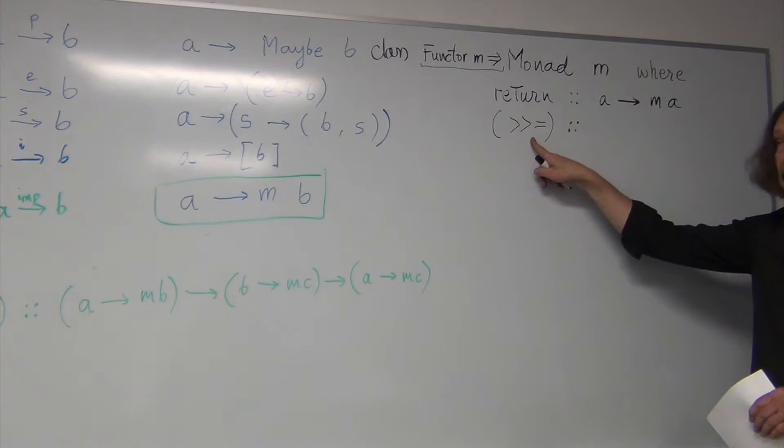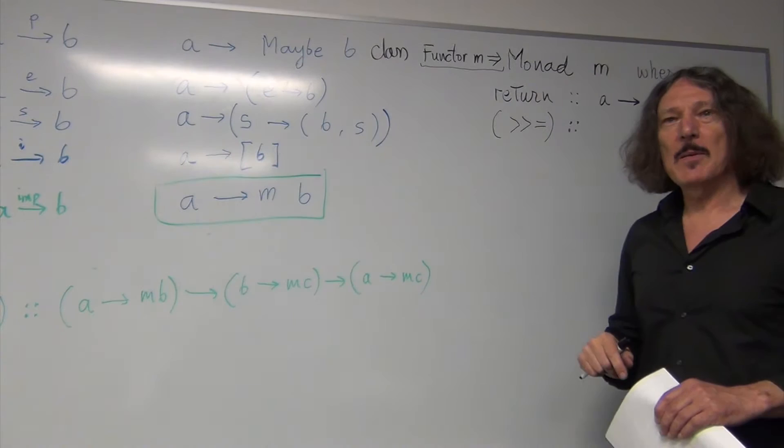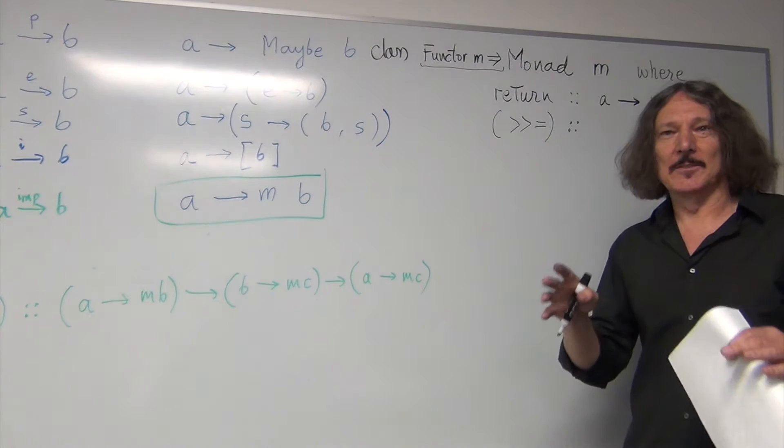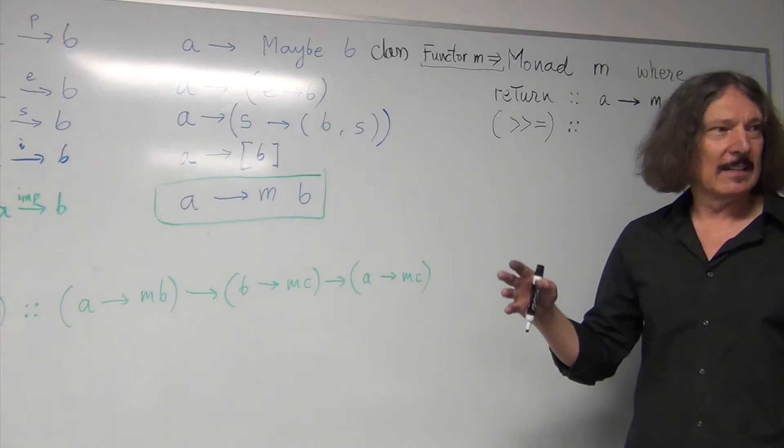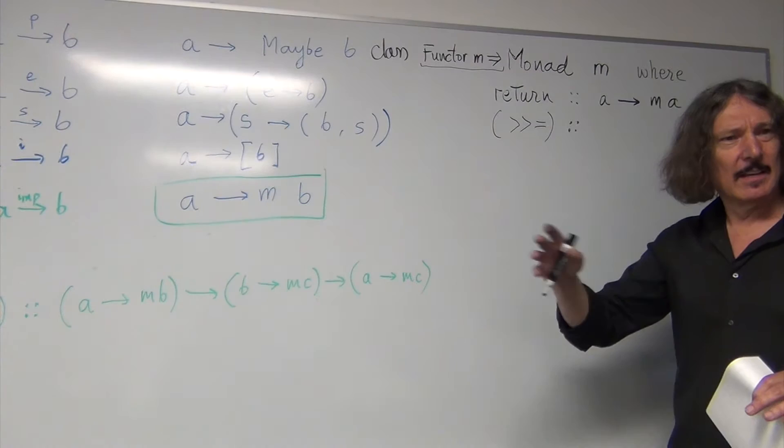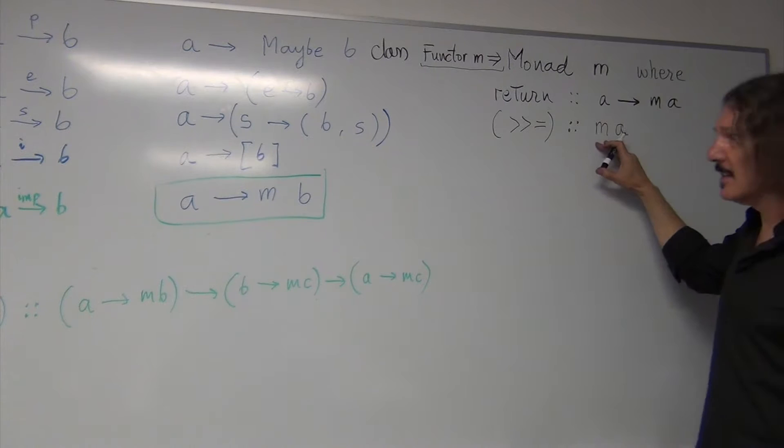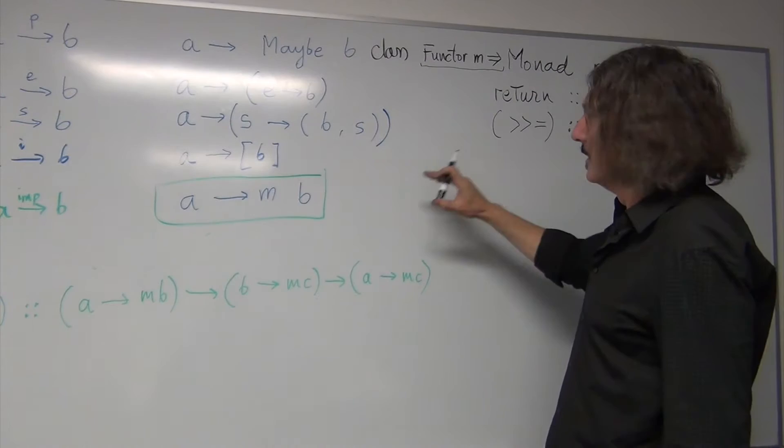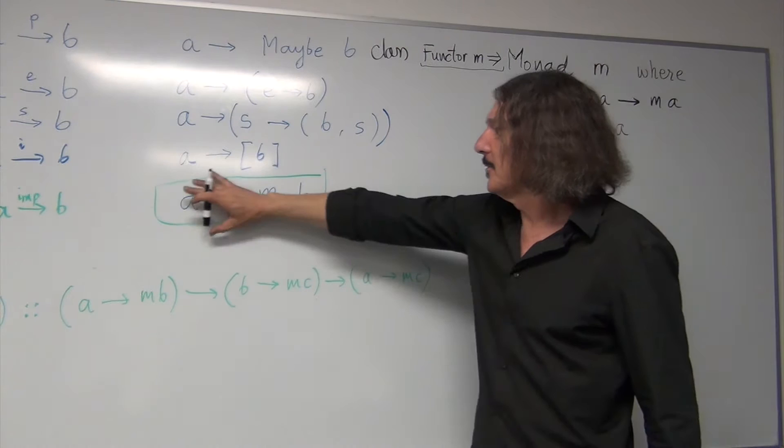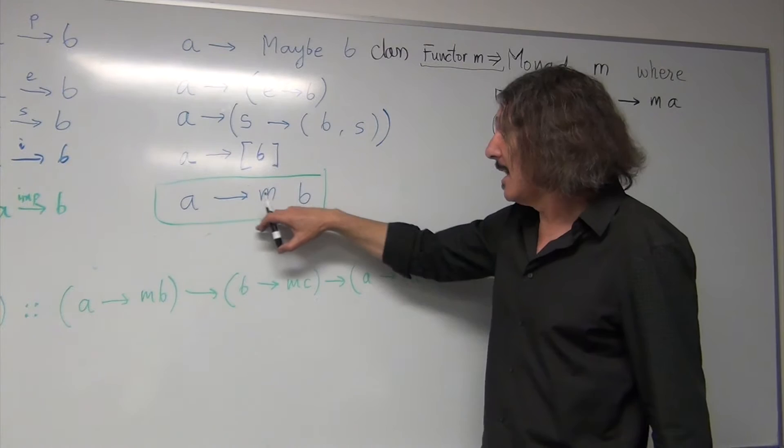And instead of taking two functions, it sort of bypasses this thing and says, just give me the result of this first function. Don't give me the whole function that produces this monadic value. Just give me the result of it and I'll bind it to the function. So, it takes as the first argument ma. Think of this as a result of the Kleisli arrow.